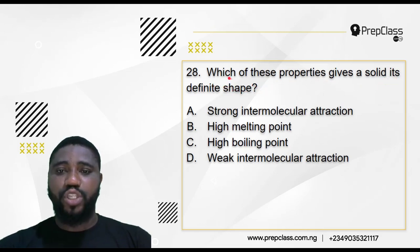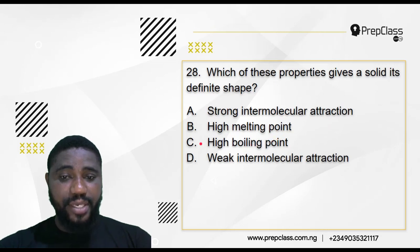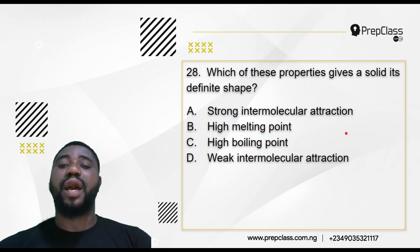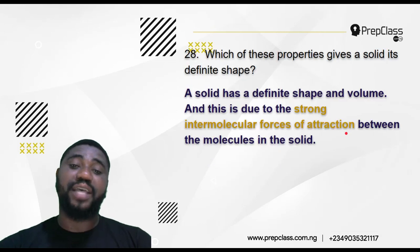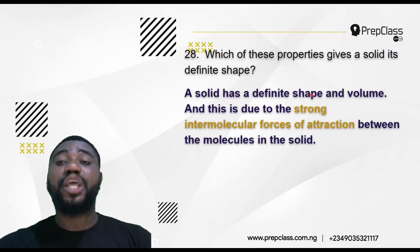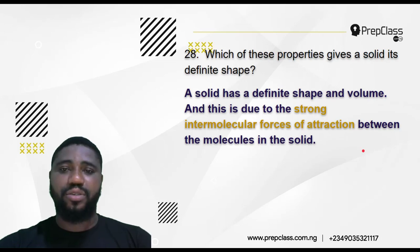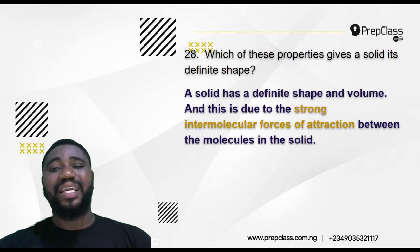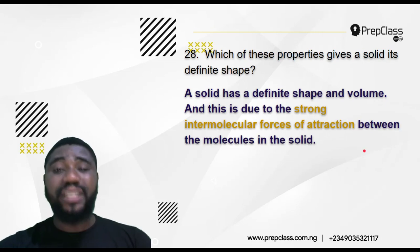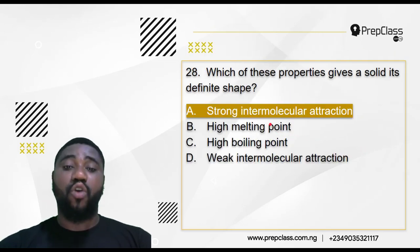Question 28: Which of these gives a solid its definite shape? Option A: strong intermolecular attraction; B: high melting point; C: high boiling point; D: weak intermolecular forces of attraction. The correct answer is option A. A solid has a definite shape and volume due to the strong intermolecular forces of attraction between the molecules of the solid — that is what is responsible for the solid's definite shape.